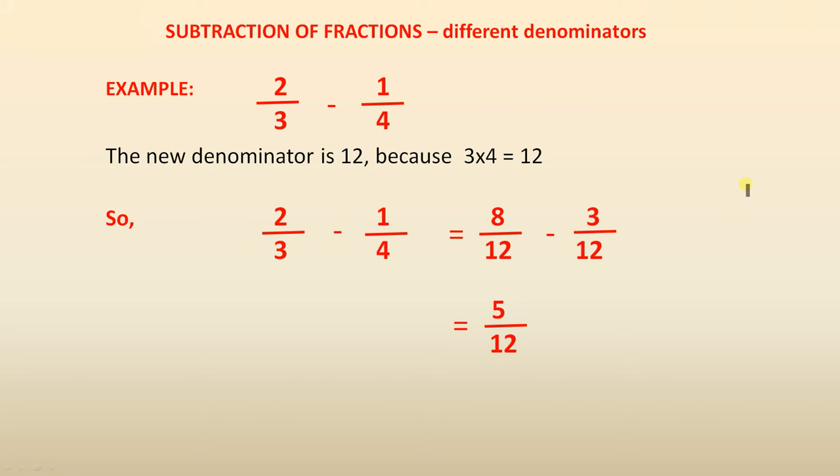Subtraction of fractions with different denominators. As before, we have to find a new denominator. Now the new denominator is 12. Why is that the case? Because if you multiply this 3 and this 4 together, 3 times 4 gives you 12. So here are the denominators for each of the new fractions: 12.